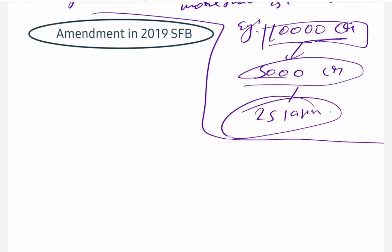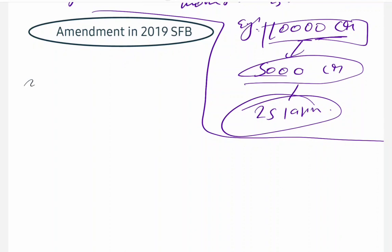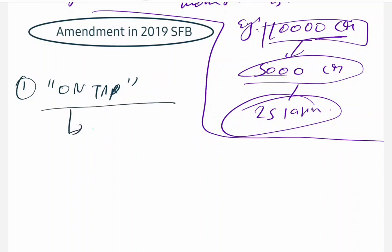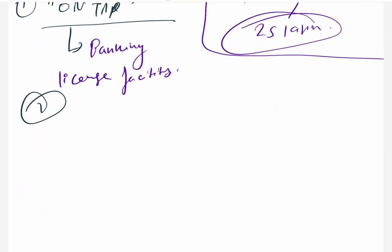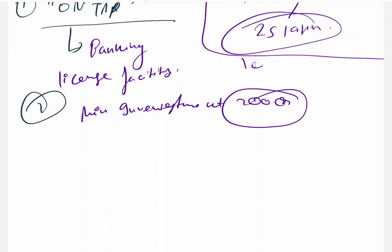Now let's see the 2019 amendment. First: on-tap process was introduced — whenever you are ready and have the capital and meet the guidelines, you can apply to RBI for a banking license anytime through the on-tap process. Second: minimum investment was increased from 100 crore to 200 crore rupees.